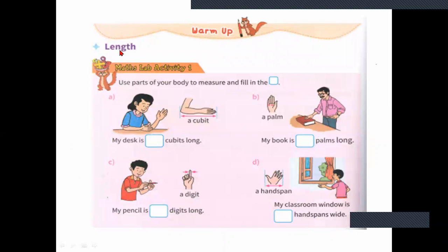See here — length. A length with your body parts, how you will measure. When you use your hand from your elbow to the palm part, this is called a cubit. When you measure a thing with this part, it is called a cubit.